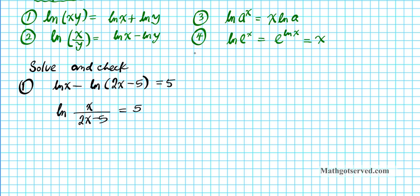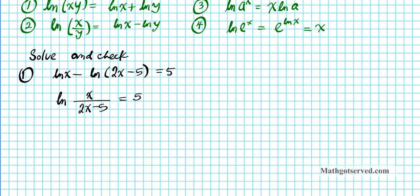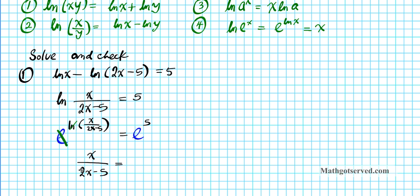Now we're going to eliminate this using the inverse property. Remember, the base of ln is e. So we're going to put e on both sides and exponentiate both sides using e as the base. We now have e to the ln of x over 2x minus 5 equals e to the 5. On the left side, the e and the ln cancel each other out, leaving x over 2x minus 5 equals e to the fifth power.